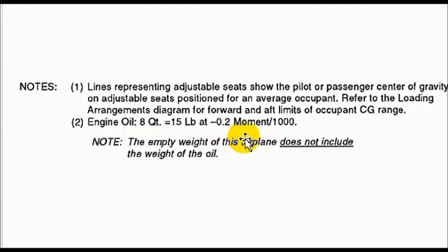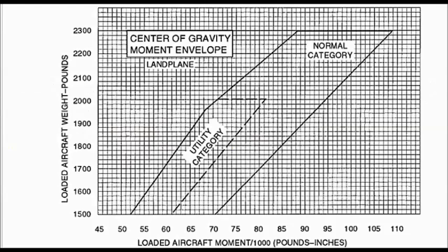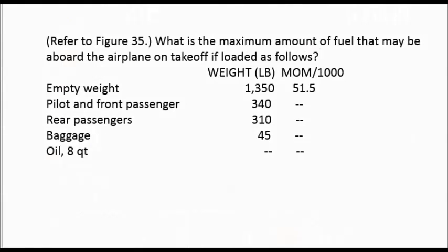What we need from this for our purposes is the amount of engine oil: 8 quarts, how much it weighs — 15 pounds — and the negative load moment. After we come up with our total weight, we'll enter here, and our load moments will enter here, and we'll meet up somewhere — hopefully within either the normal category or the utility category. We need to find each individual load moment for the pilot, front passenger, rear passengers, baggage, and oil.